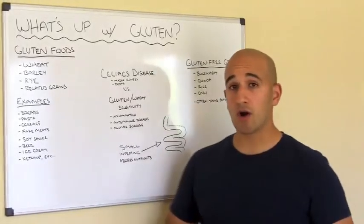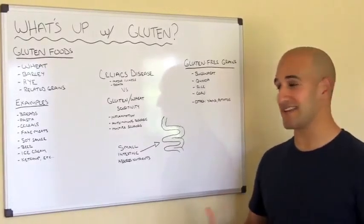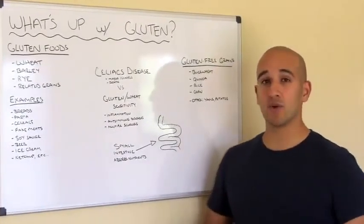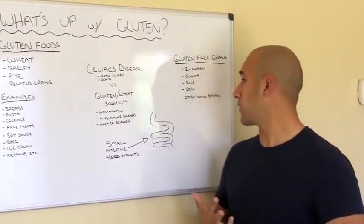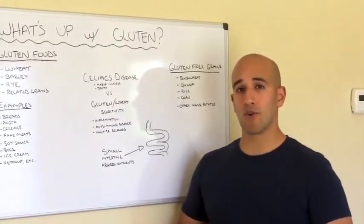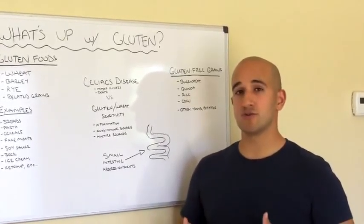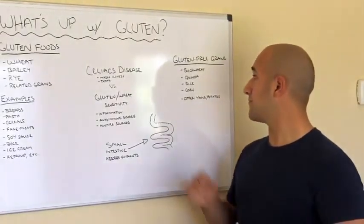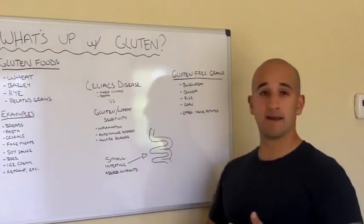There are a lot of gluten-free grains. Those are going to be buckwheat — even though it says wheat, buckwheat is actually gluten free — quinoa, which is an excellent source if you choose to eat grains, rice, corn, and then of course potatoes and yams. Those aren't grains, but they are carbohydrate sources that do not contain gluten. So if you choose to eat carbohydrates, I would say you want to eat these five: buckwheat, quinoa, rice, corn, and potatoes.